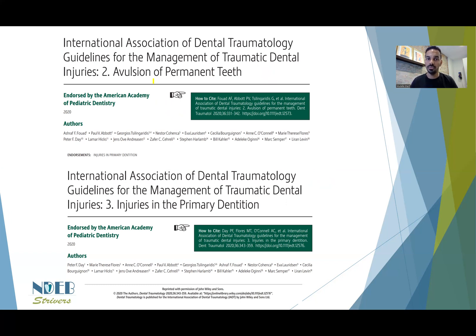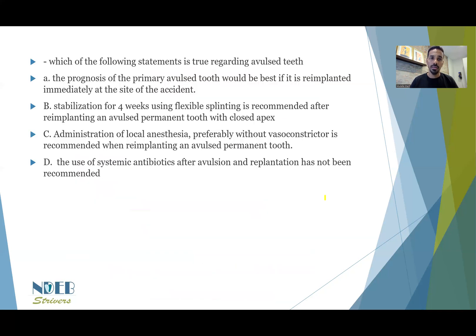Today's question and its answer reference two articles: the International Association of Dental Traumatology Guidelines for the Management of Traumatic Dental Injuries related to avulsion of permanent teeth, and the other article covers injuries of the primary dentition. This question combines both, as it is an avulsion question that covers both the permanent and the primary dentition. Let's jump into the question.